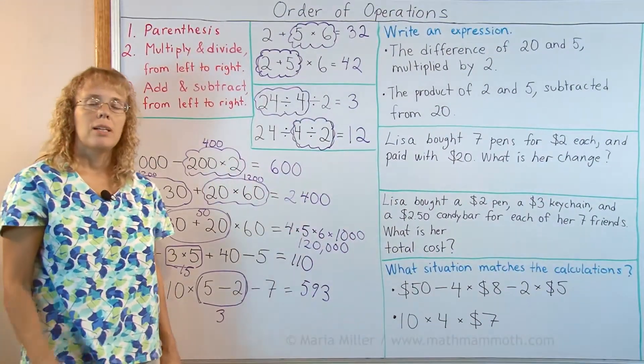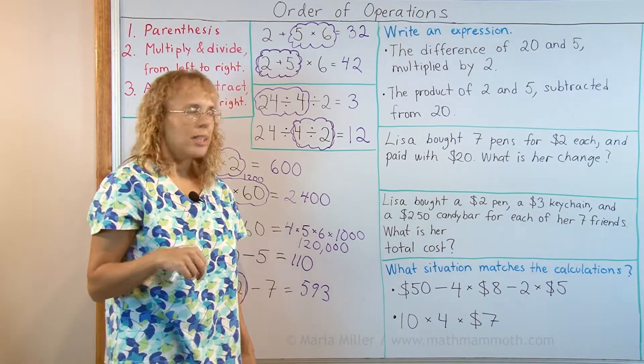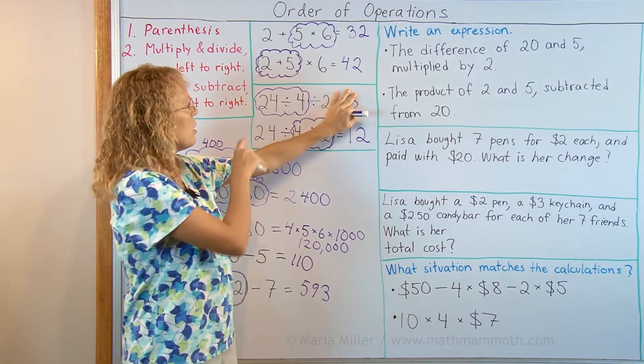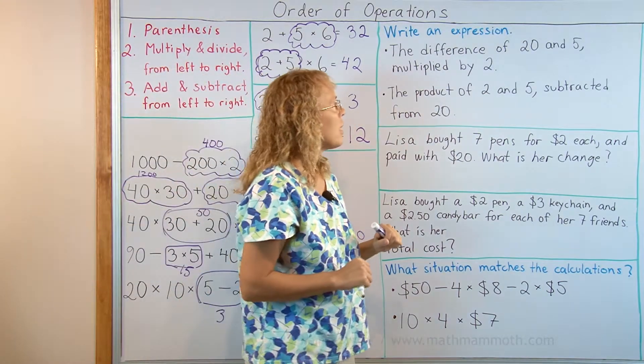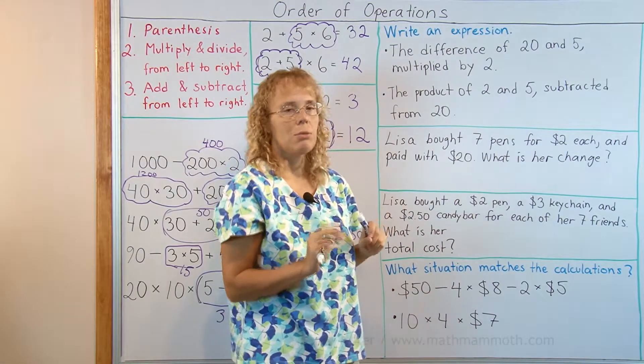Now we're going to look some at expressions. Expressions are basically number sentences, just like you saw here. They don't have to have the equal sign. Just what I had on the board before we solved it, those are expressions. And they just have numbers and symbols like plus, minus, parenthesis, whatever.